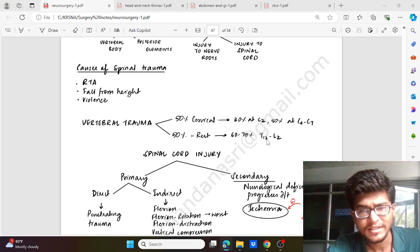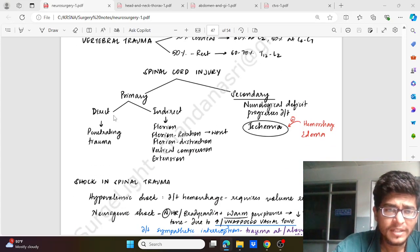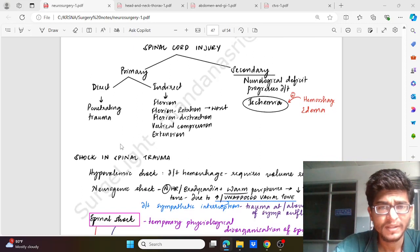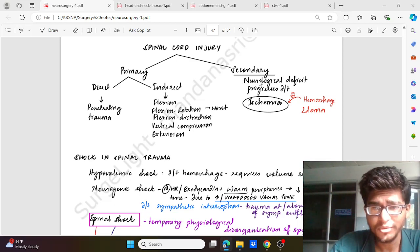Spinal cord injury could be primary or secondary. Primary - we have direct and indirect. Indirect could be due to penetrating trauma. Indirect could be due to flexion injury, flexion with rotation which is the worst form, flexion with distraction, vertical compression, and extension injury. Secondary is due to ischemia, ischemia due to hemorrhage or associated with edema and swelling.